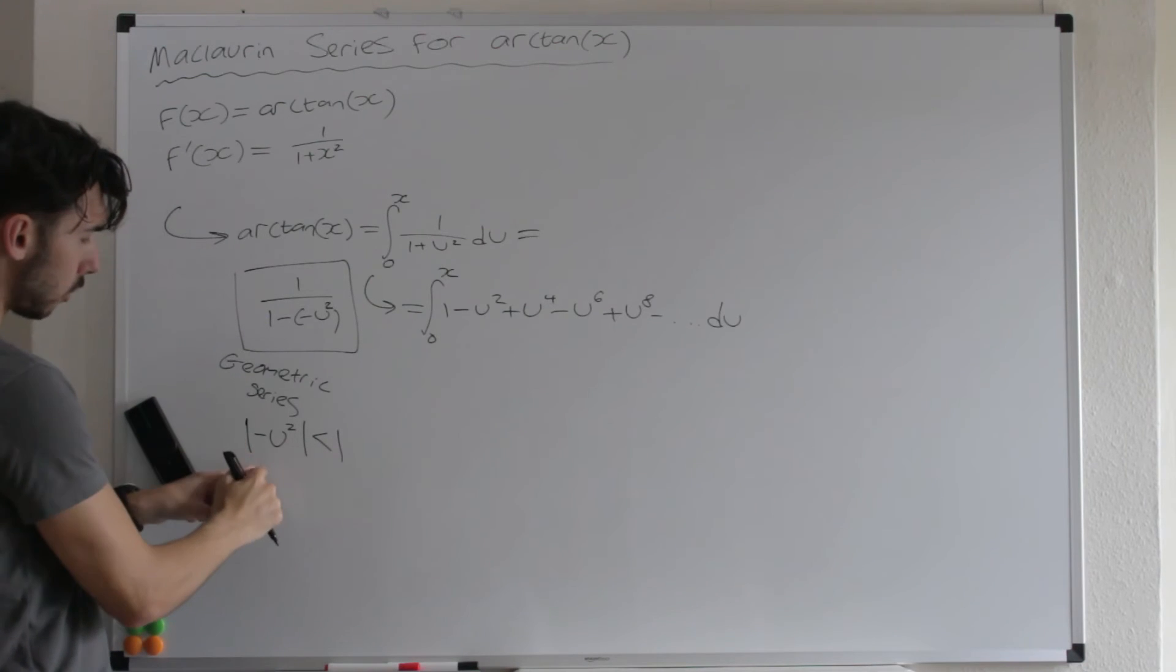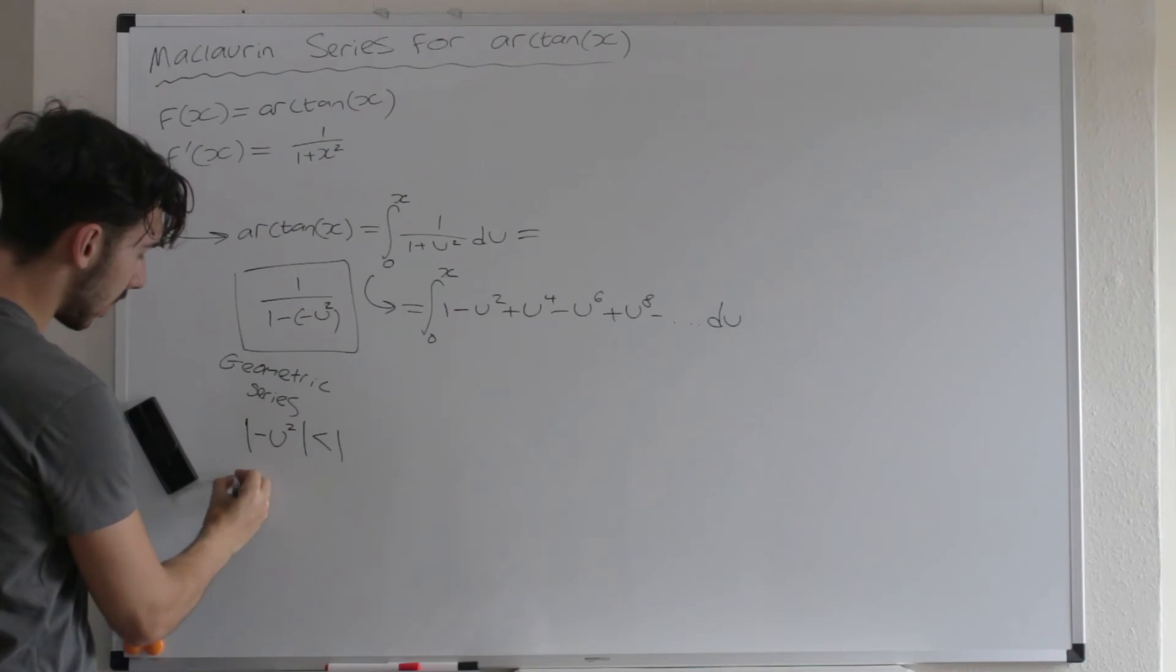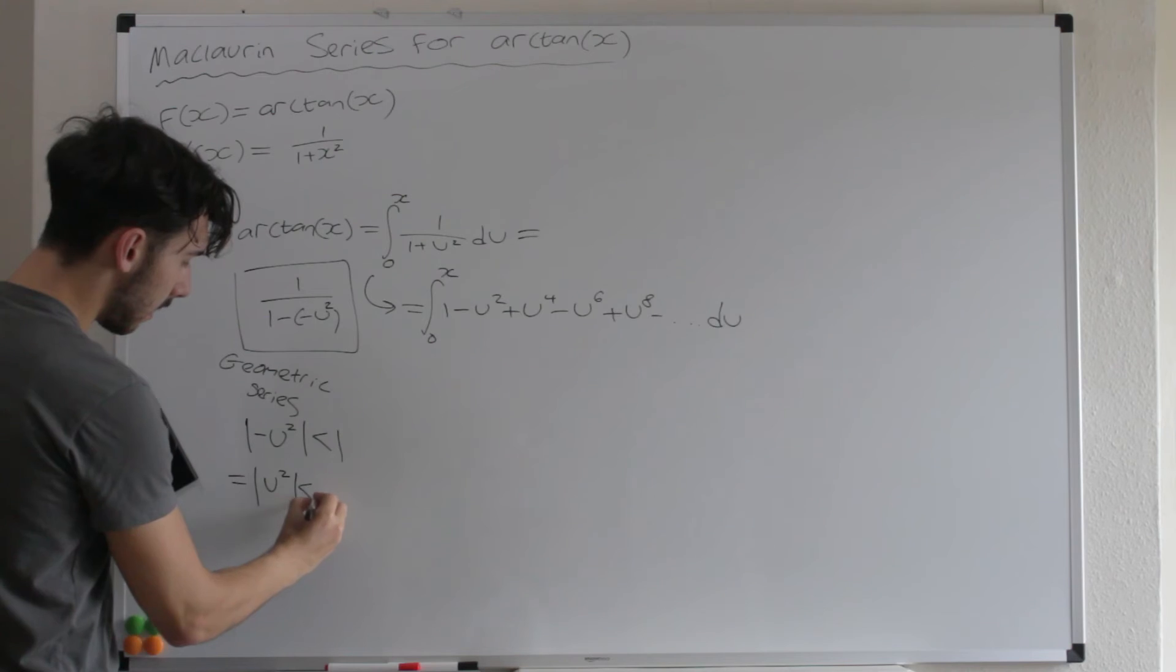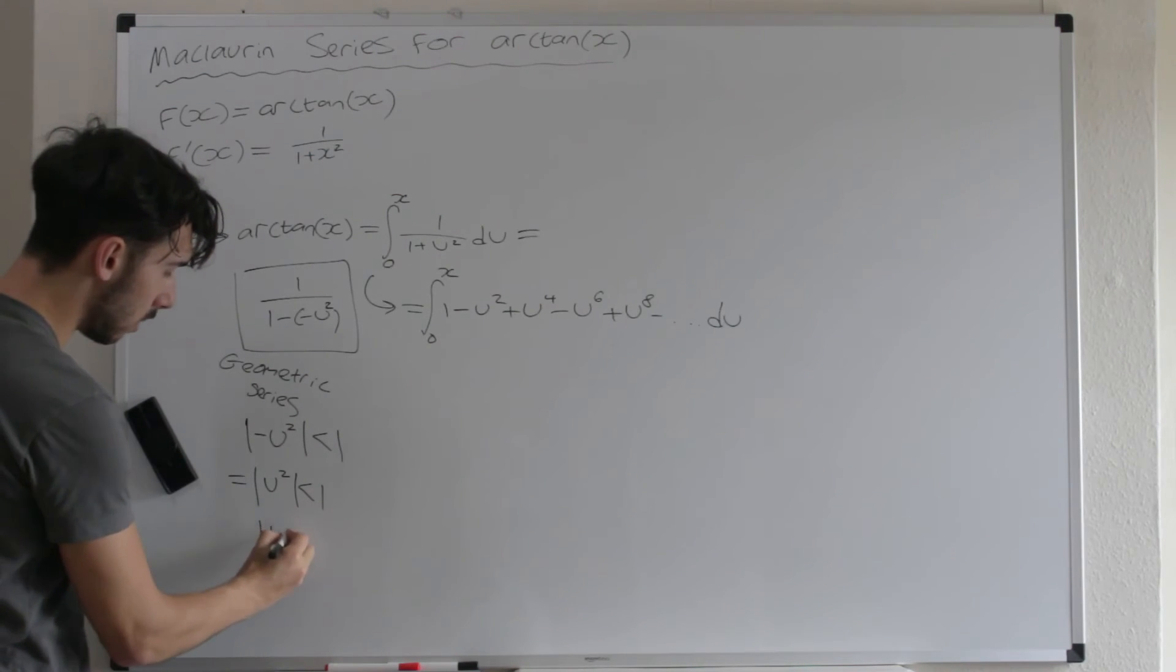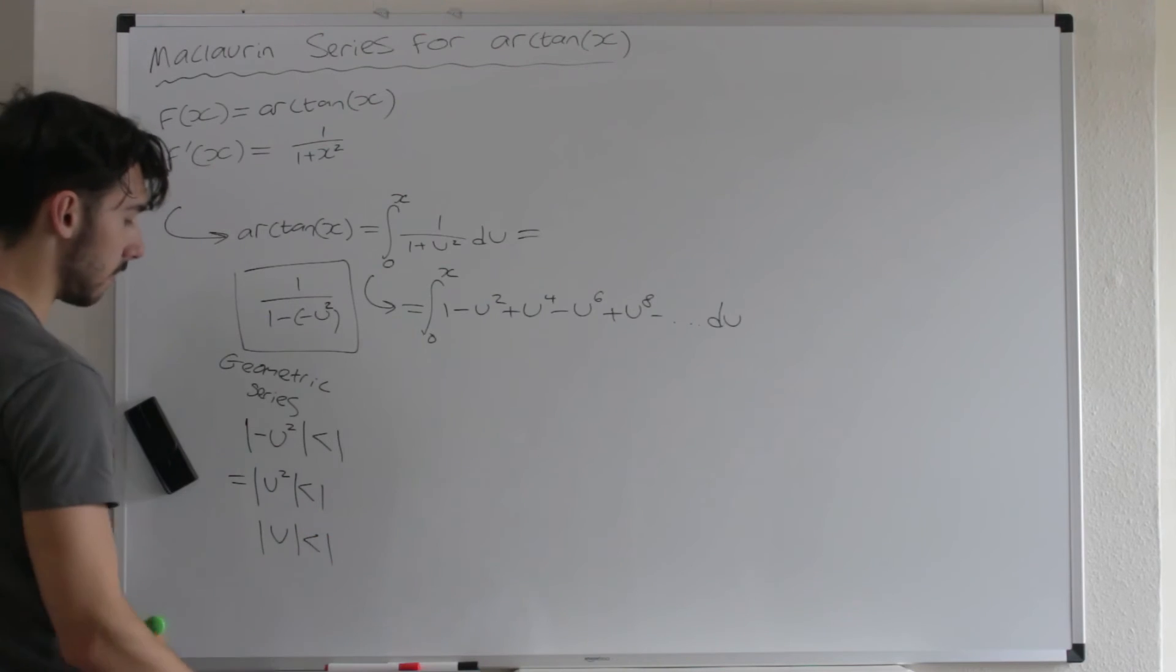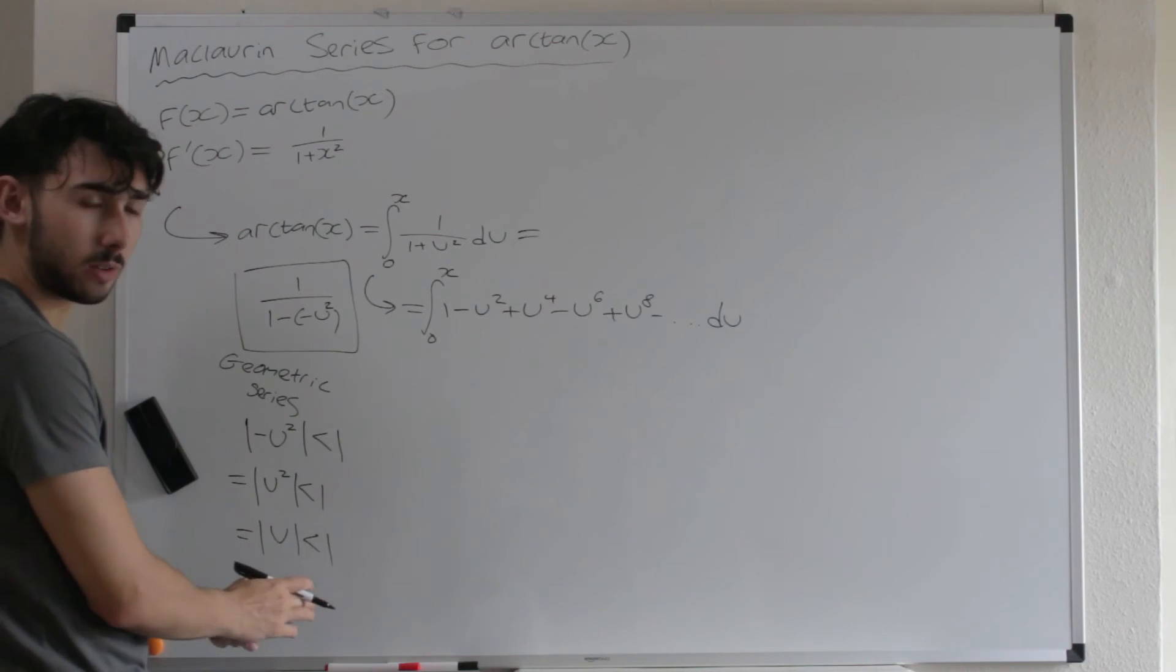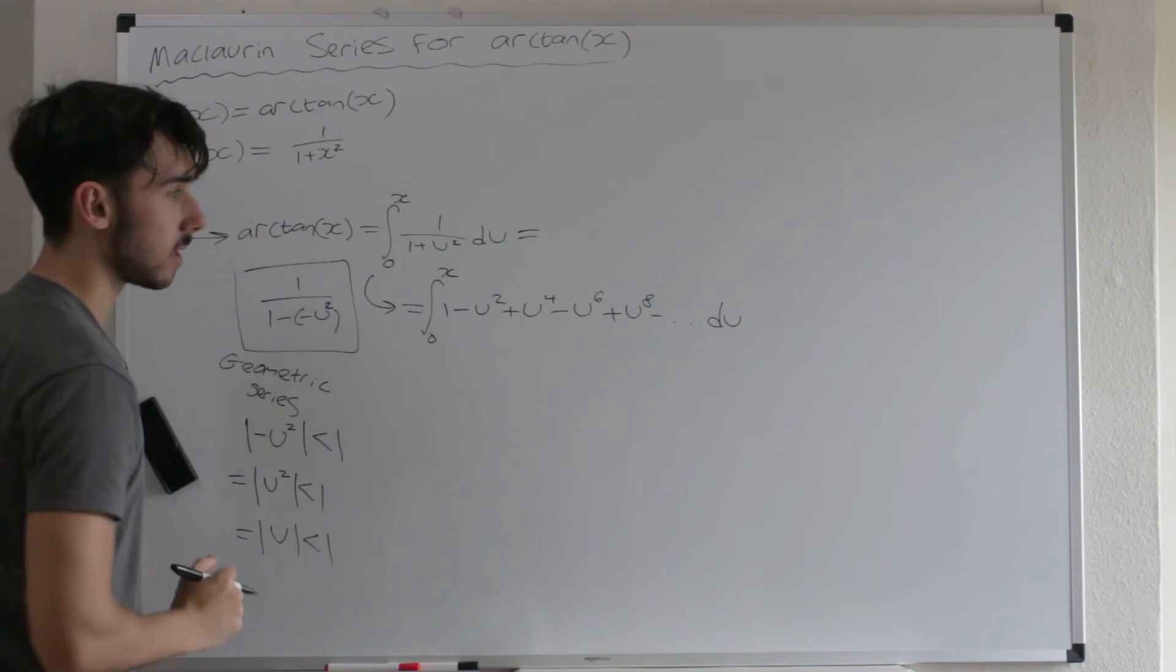By the way, the modulus of a negative is just the modulus of the positive. So this is the same thing as just U squared. And if the modulus of U squared is less than 1, then the modulus of U is just less than 1, isn't it? So just this is another thing as well to make note of. As long as the modulus of U is less than 1, we're good. Okay, anyways, that's a side note.